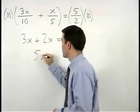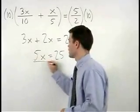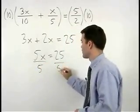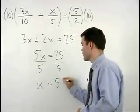we have 5x equals 25. Dividing both sides by 5, x equals 5.